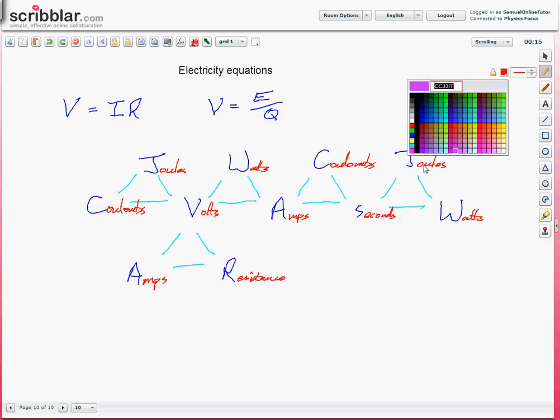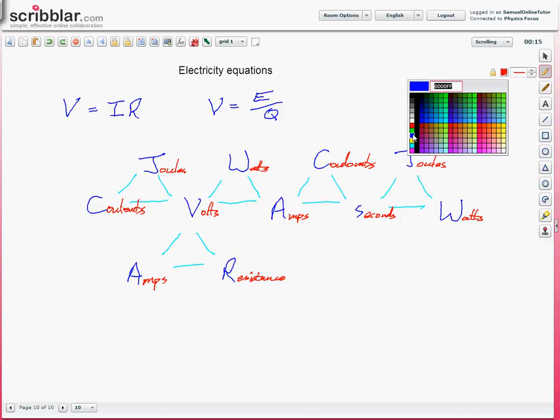So, using this, let's pick an example. Let's say this one here. So, if I want to know the number of Coulombs passing a particular point, I look at this formula pyramid. I want the number of Coulombs, cover over the C. What's left in the formula pyramid? A times S. So, Coulombs, charge in other words, equals A, that's amps, so that's current, times S for seconds, that's time. Q equals IT. So, you've got that equation straight away out of this formula pyramid.